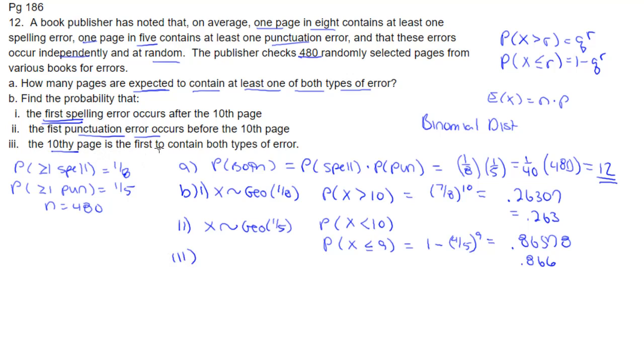And then part three, the 10th page is the first to contain both types of error. So again, we've got a geometric. The both probability is 1/40. And the first page is the 10th. So that means we're trying to find the probability that X equals 10. We're going to use this formula here.